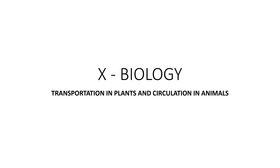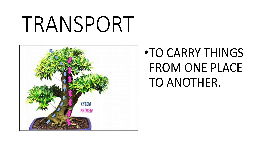Good morning students. Welcome to our biology class. Today we are going to learn chapter 14, Transportation in Plants and Circulation in Animals. What is transport? Transport means to carry things from one place to another. Have you ever wondered how the water and minerals move from the soil to the plant, and how the prepared food by the leaf is translocated to various parts of the plant? In this chapter we are going to learn this.